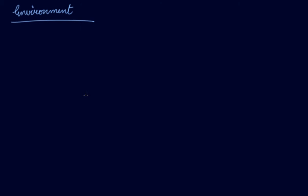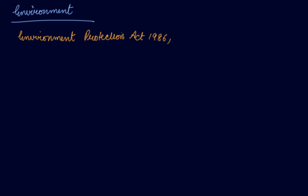Now, what is environment? See, everything around you forms your environment, which includes your biotic as well as non-living elements, also known as abiotic elements, like your air, water, soil, minerals, which make up your surroundings and impact your existence of life. This is known as environment. According to the Environment Protection Act 1986, whenever you define something according to some act, you have to put that definition into inverted commas.